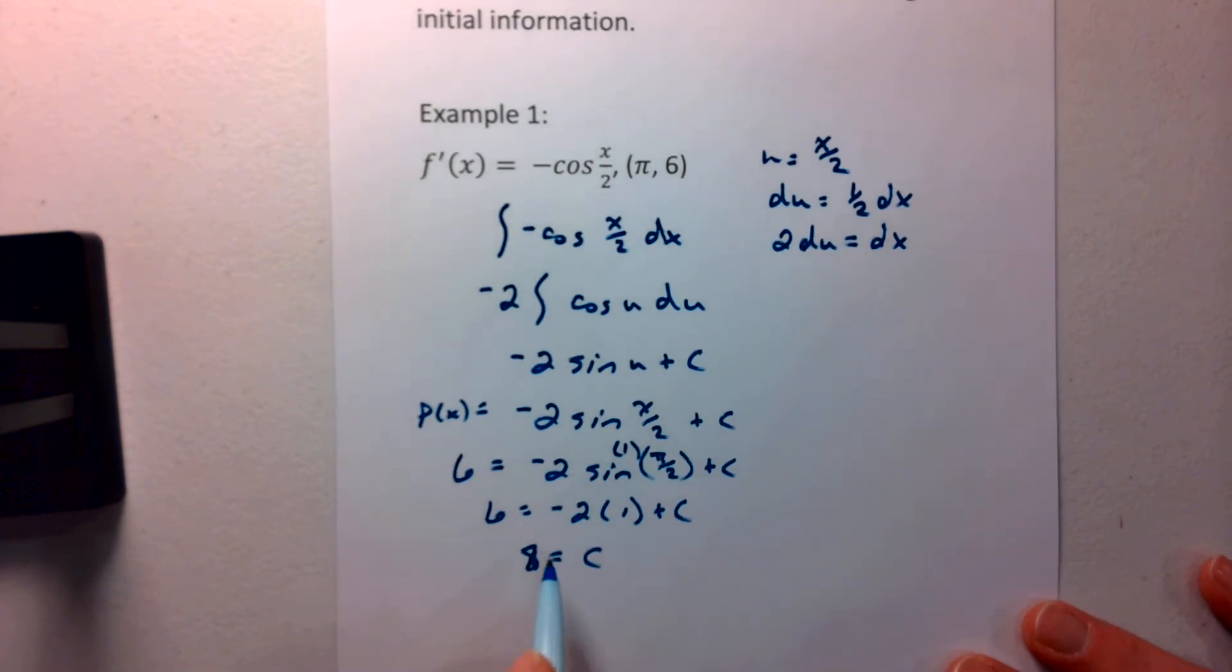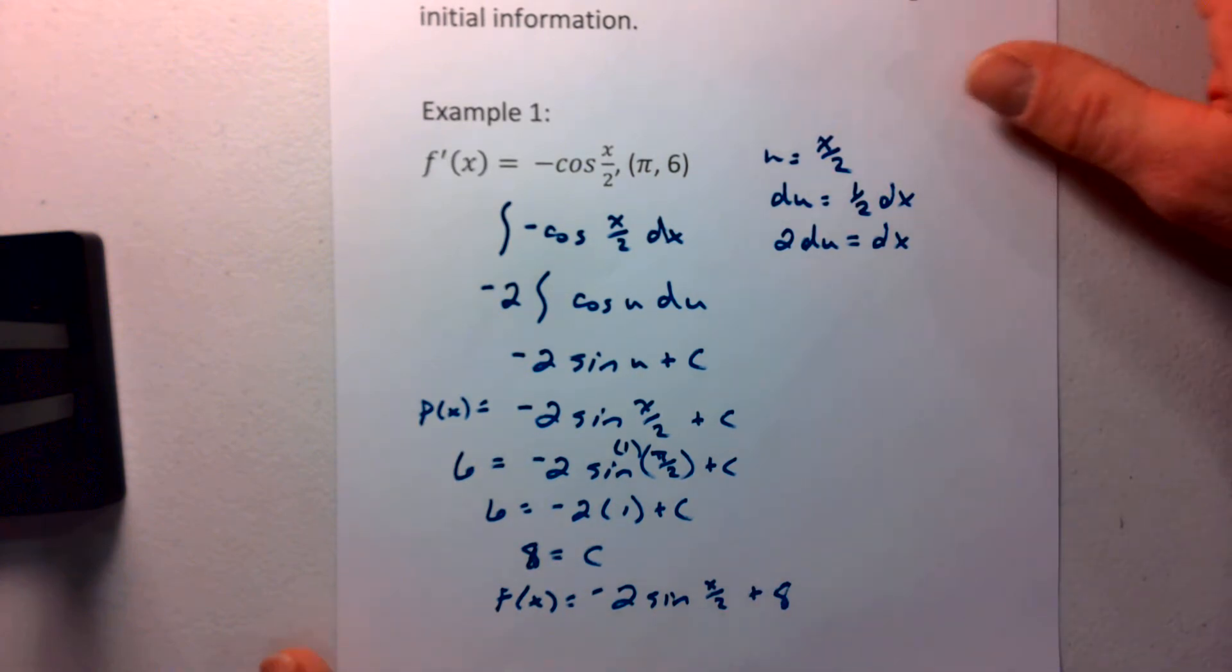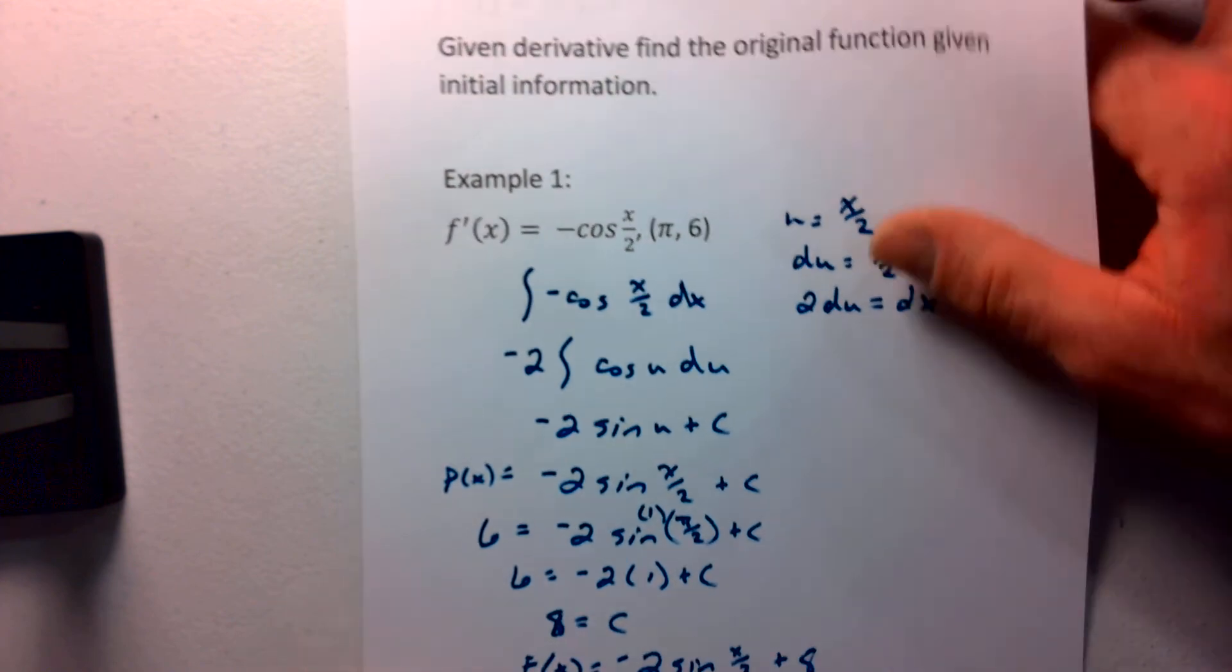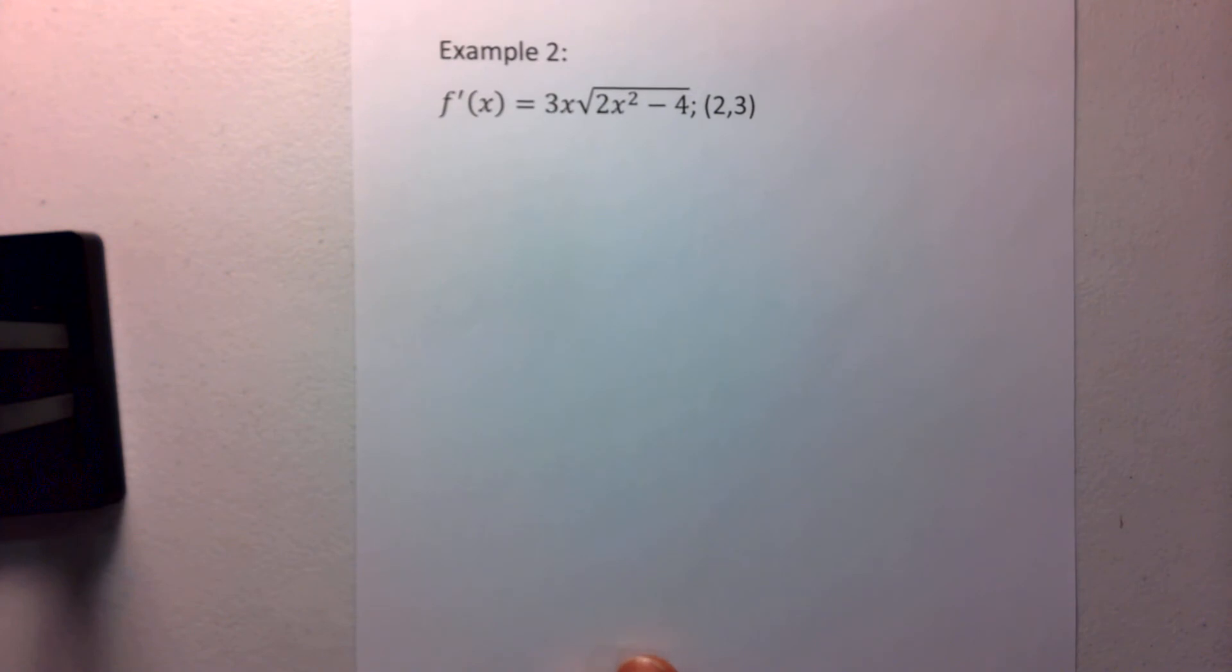If 8 equals c, we can go ahead and write our original function complete now as negative 2 sines of x over 2 plus 8. And that gives us our original function. I have just one more here, again, to give you a little bit of what we're doing.